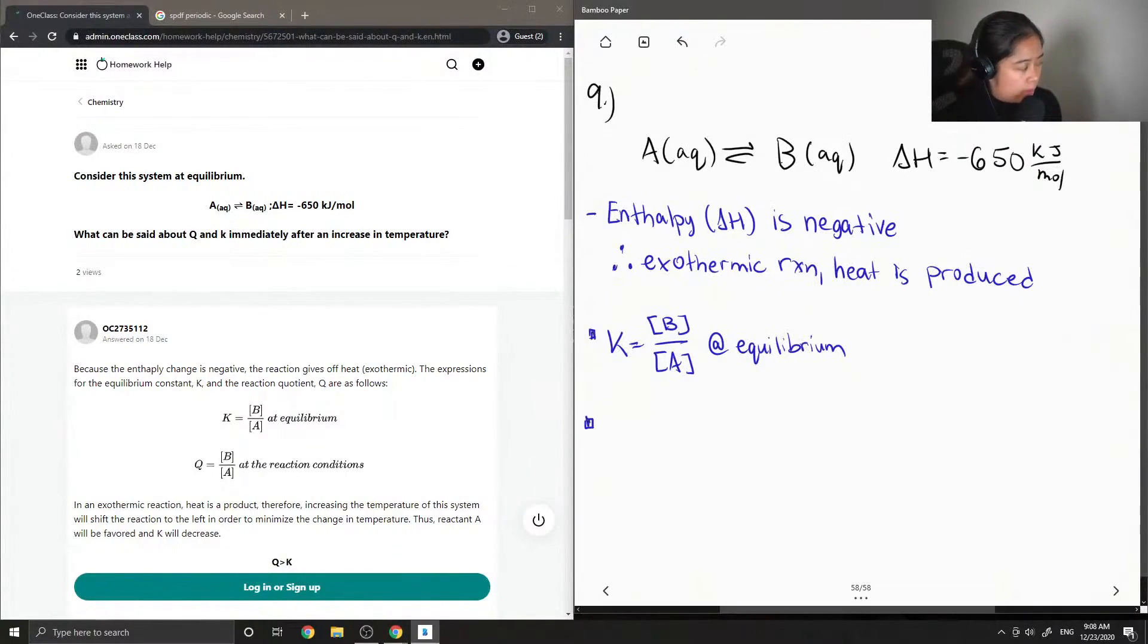And Q similarly is also the concentration of B over the concentration of A, but this is at reaction conditions.